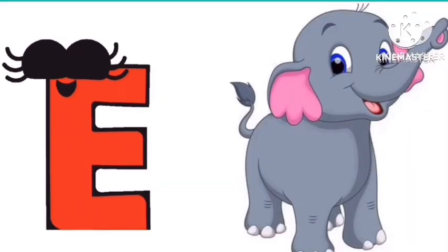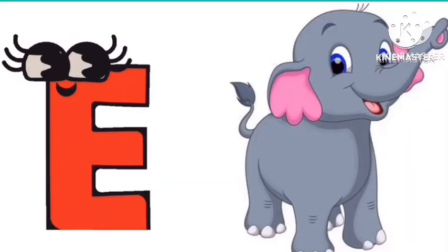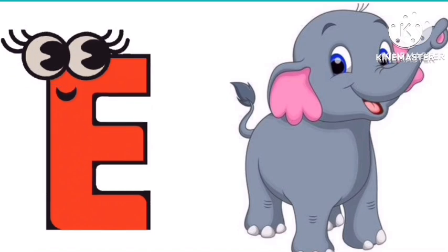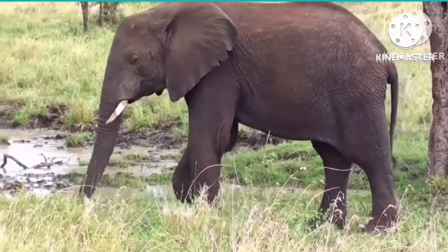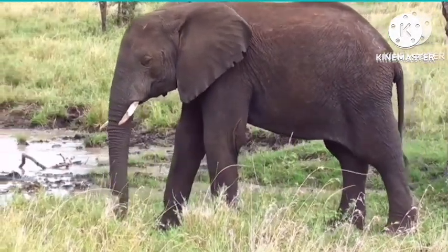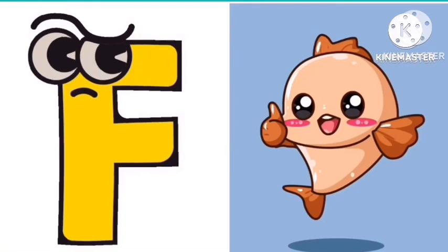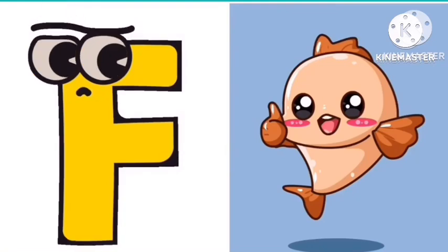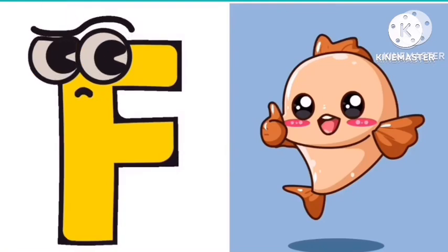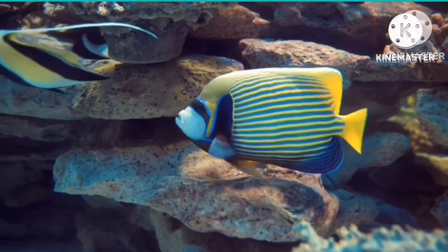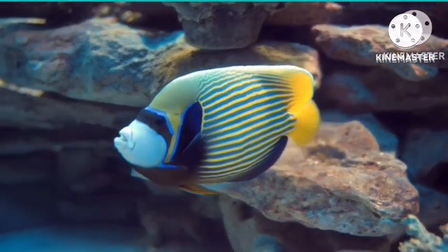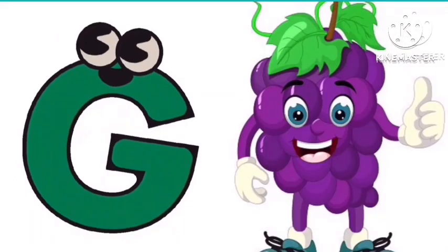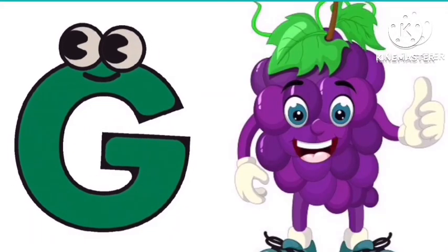E is for elephant. F is for elephant. F is for phish. F is for fish. D is for grapes.